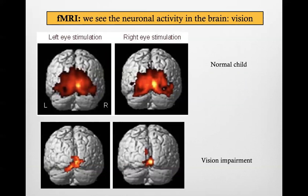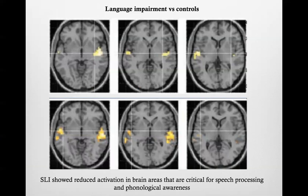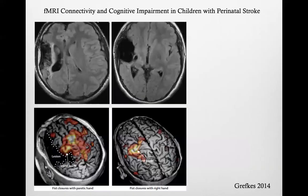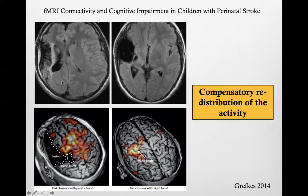In a child with a vision problem, there is a massive reduction of activity in the visual areas. Similarly, there can be reduced activation in brain areas critical for speech processing and pathological awareness when there is a language impairment — you can see the normal versus pathological activation of language and auditory areas. This is a child with a middle cerebral artery infarction, an ischemia. They showed how motor function moved, thanks to neuronal plasticity, more laterally, because the area that normally controlled the hand was damaged by the ischemia — a compensatory redistribution of activity.